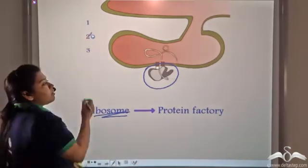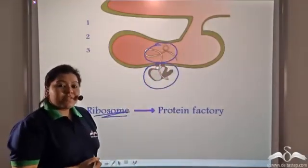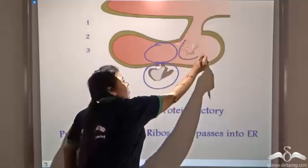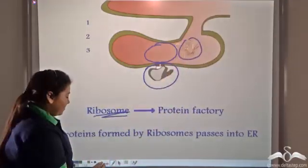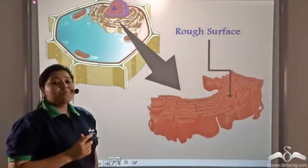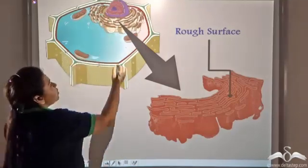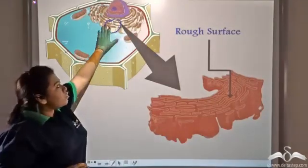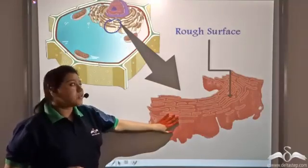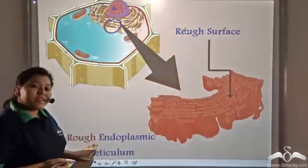Proteins are manufactured by the ribosomes and further transferred into the endoplasmic reticulum for transport within the cell. These bead-like ribosomes are attached to the portion of the endoplasmic reticulum towards the nucleus. If you zoom in on the structure, you will see that these ribosomes give the endoplasmic reticulum a very rough appearance, and that is why it is known as the rough endoplasmic reticulum.